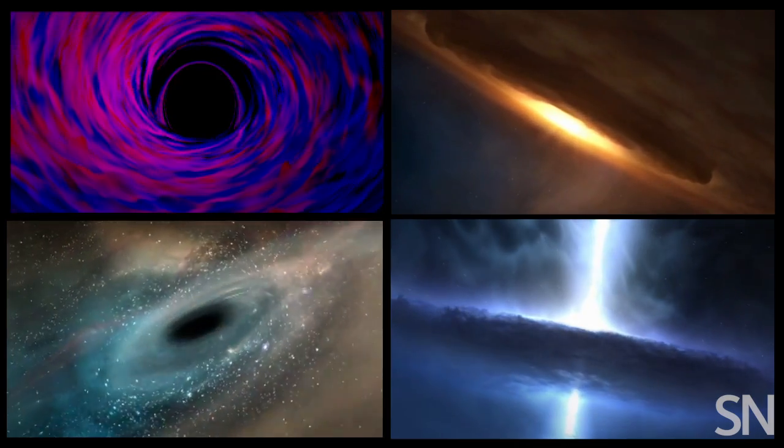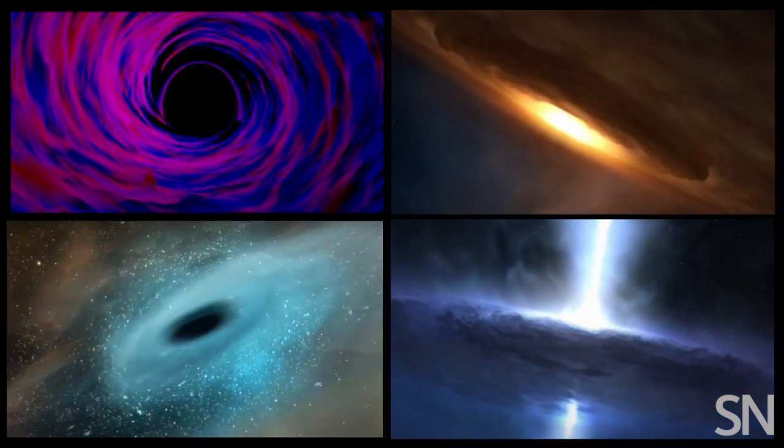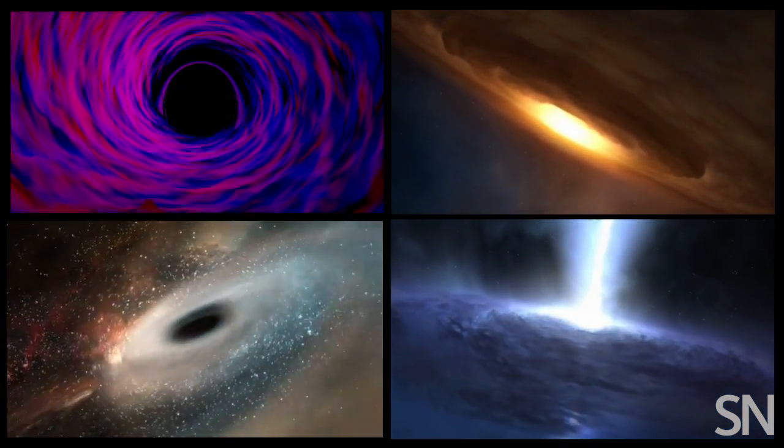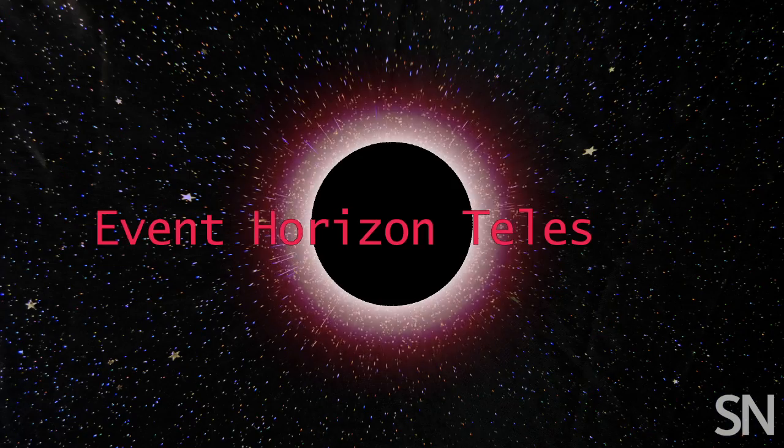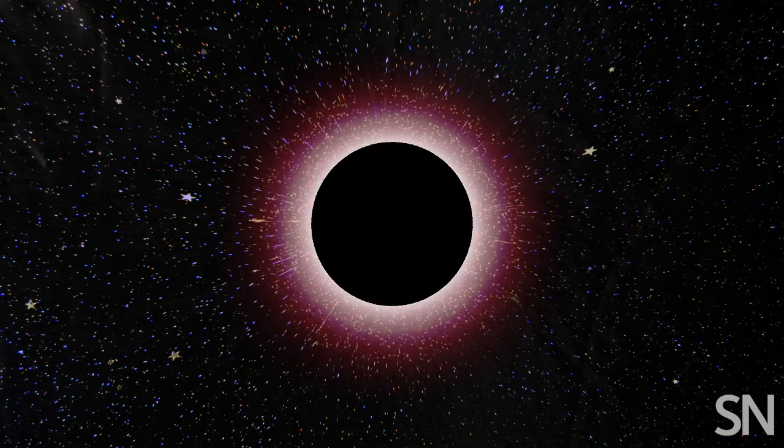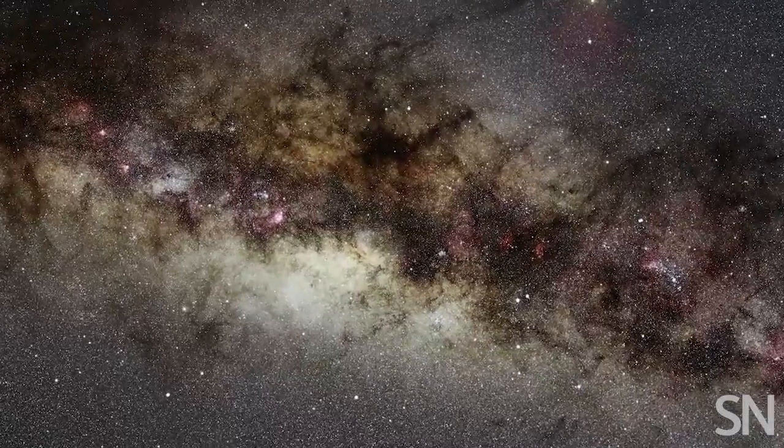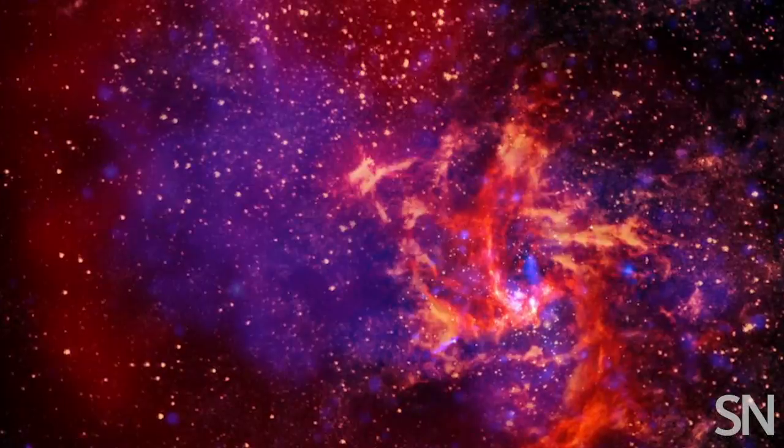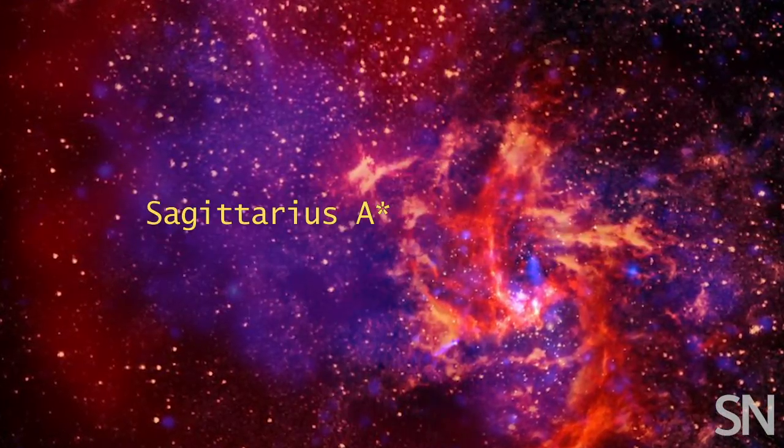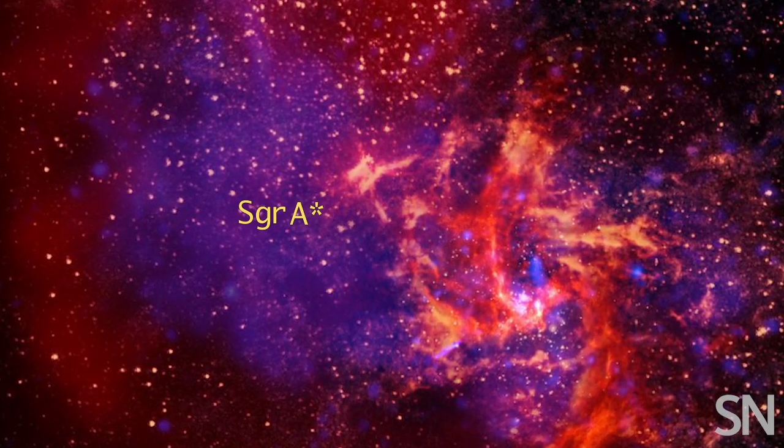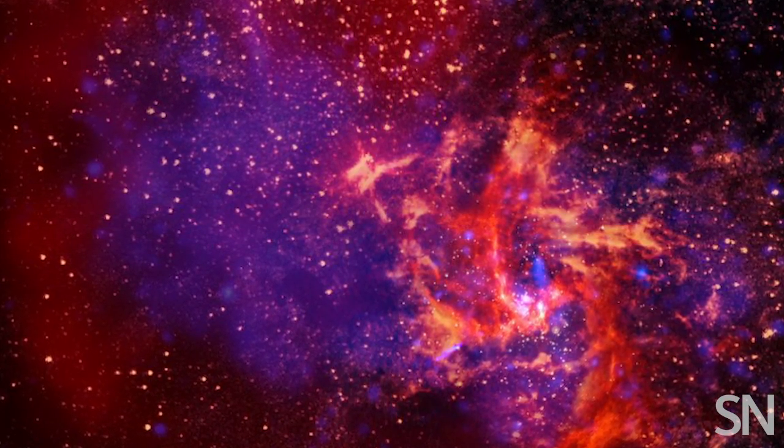Most illustrations focus on the accretion disk. But soon, we could be looking at the real deal, thanks to the Event Horizon Telescope, or the EHT. The EHT is trying to take the first picture of the black hole at the center of the Milky Way, called Sagittarius A star, or Sag A star for short. The team expects to produce results later this year.